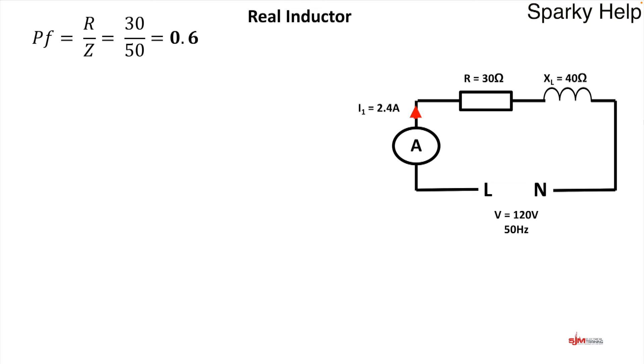So let's look at our real inductor. And let's look at the power factor for this, which would be R over Z. So we get a power factor of 0.6. Which would be lagging because it's an inductive load. We can work out the phase angle. cos to the minus 1 of 0.6 gives us an angle of 53 degrees.